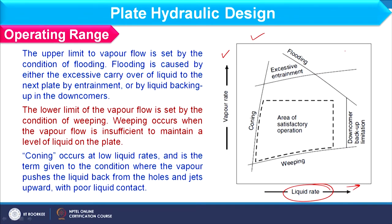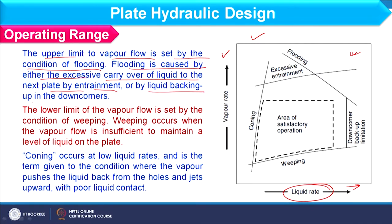We basically consider the proper area of operation over the plate. We have different points — let us discuss these. First of all, the upper limit to vapour flow is set by the condition of flooding. Flooding is caused by either the excessive carry-over of liquid to the next plate by entrainment, or by liquid backing up in the downcomer.